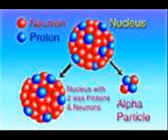An alpha particle is the same as a helium-4 nucleus, and both mass number and atomic number are the same. Alpha decay is a form of nuclear fission where the parent atom splits into two daughter products.